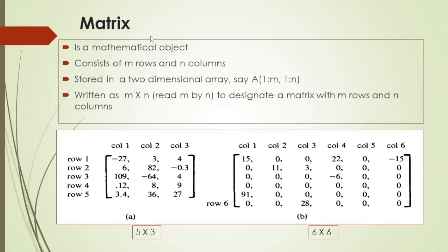A matrix is a mathematical object. There are m rows and n columns, usually represented as a two-dimensional array. We use the notation A of 1 colon M, 1 colon N, where this is the row and this is the column. Row is 1 to m, column is 1 to n. This is an m by n matrix.